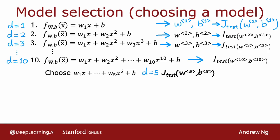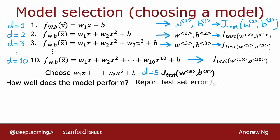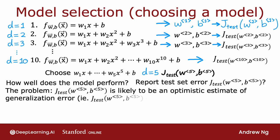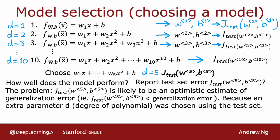If you want to estimate how well this model performs, one thing you could do—but this turns out to be a slightly flawed procedure—is to report the test error J test of w5, b5. The reason this procedure is flawed is that J test of w5, b5 is likely to be an optimistic estimate of the generalization error.